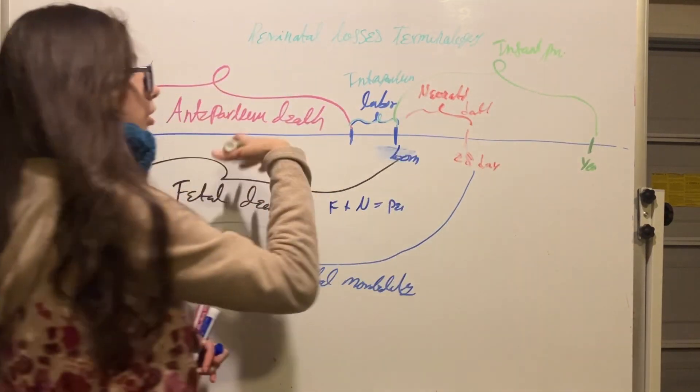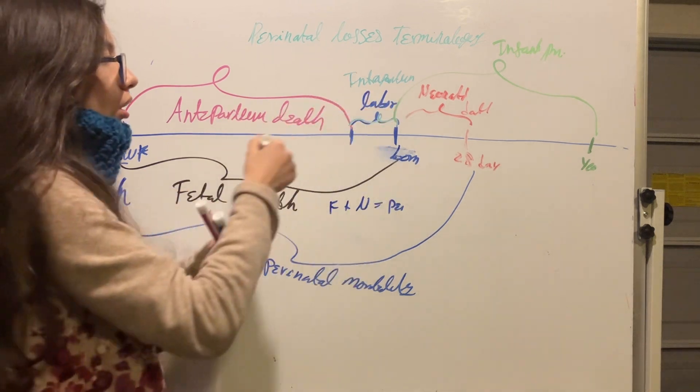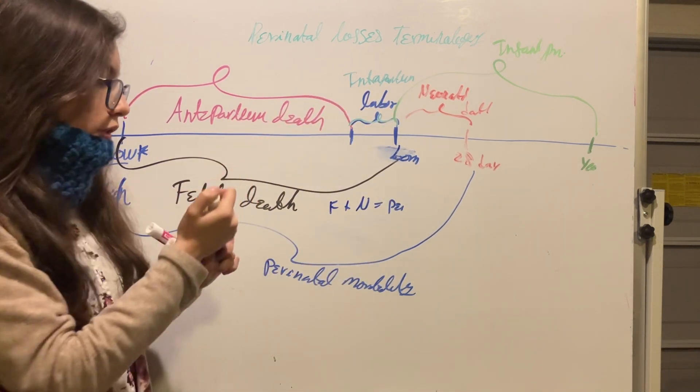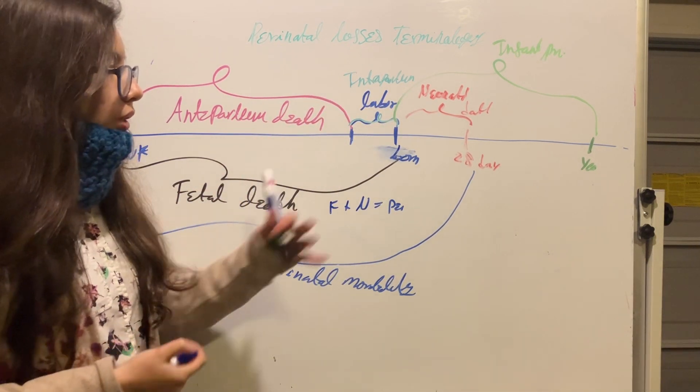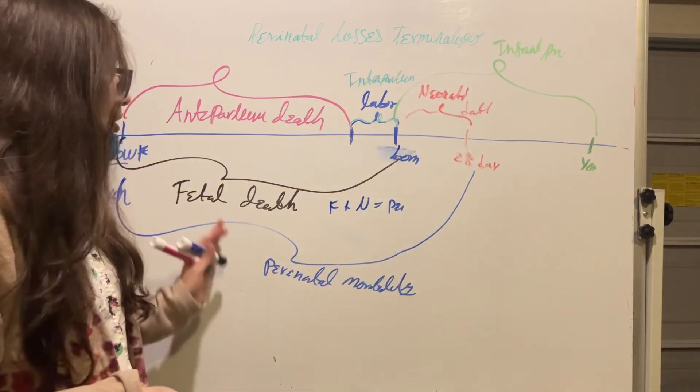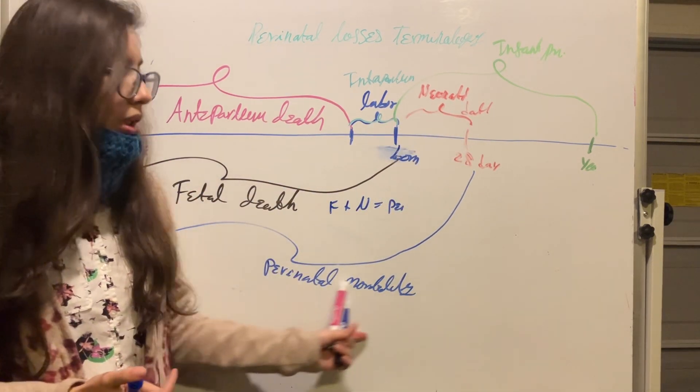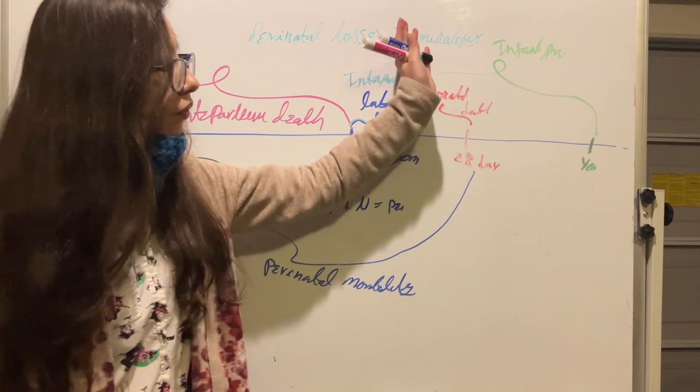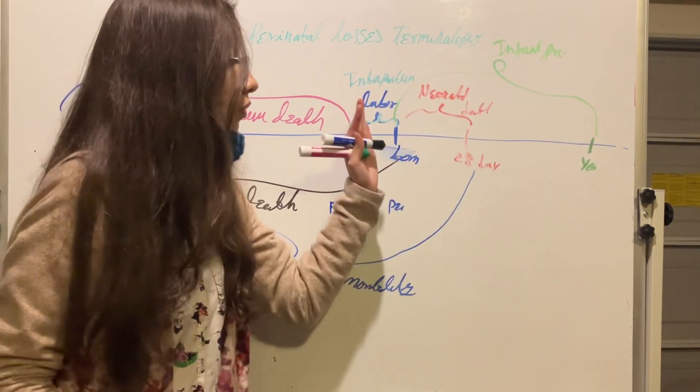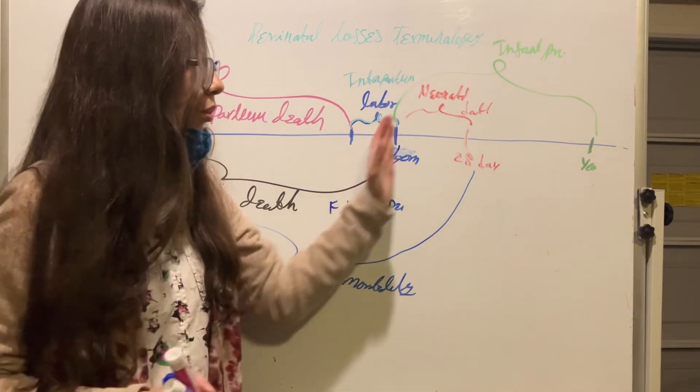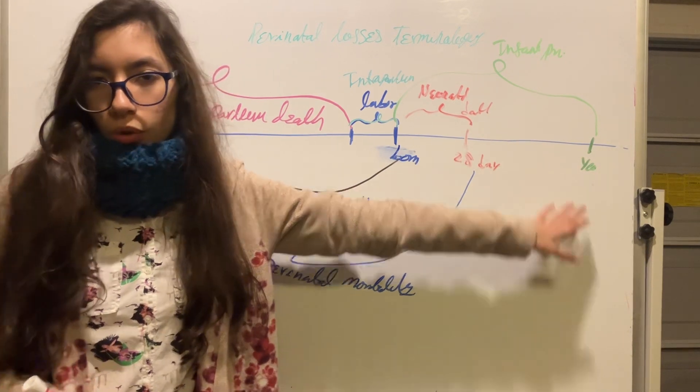So, we have antepartum death and intrapartum death, together that is fetal death. We have neonatal death, with fetal death that is perinatal death. And then we have infant death which is death of the baby from when the baby is born to when the baby is 1 year old.